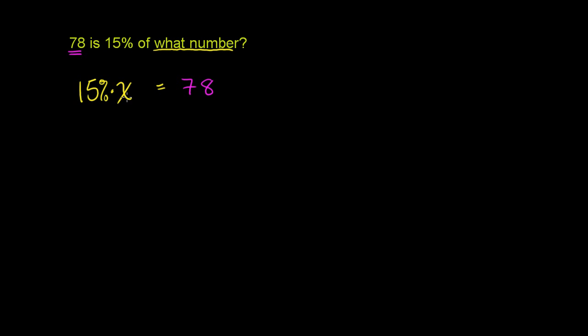And now we just literally have to solve for x. Now, 15% mathematically, you can deal directly with percentages, but it's much easier if it's written as a decimal. And we know that 15% is the same thing as 15 per 100. That's literally per cent. Cent means 100. Which is the same thing as 0.15. So we could rewrite this as 0.15 times some unknown number times x is equal to 78.